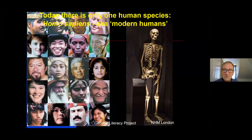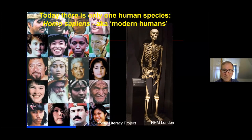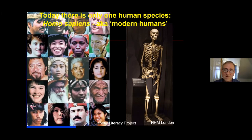Everyone is pretty well agreed that today there is only one human species, Homo sapiens, also known as modern humans. We come in many different sizes, shapes, and colours. But if we strip away all those superficial features and look at the skeleton underneath, then we share as a species a number of fundamental features. These are things we can look for in the fossil record to trace back the evolution of our species.